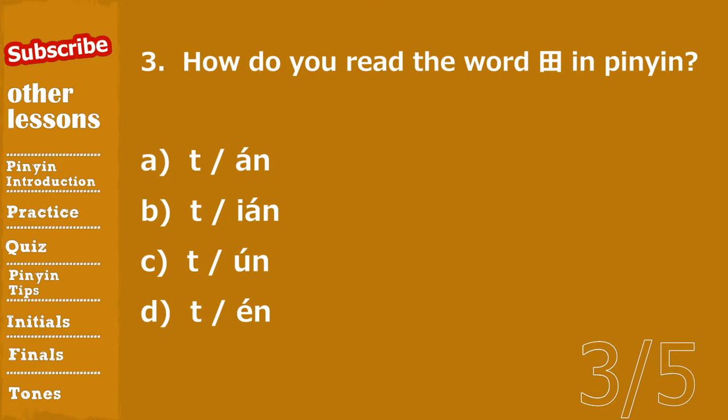Question number three. 第三题. How do you read the word 甜 in pinyin? A. 特案, B. 特言, C. 特文, D. 特案.